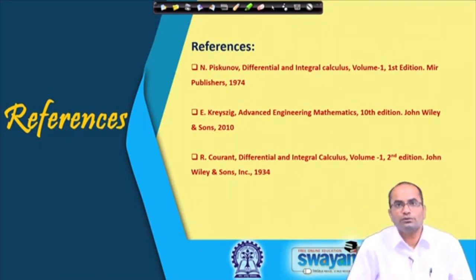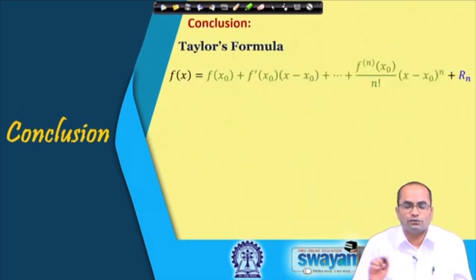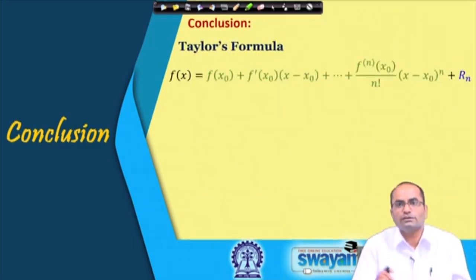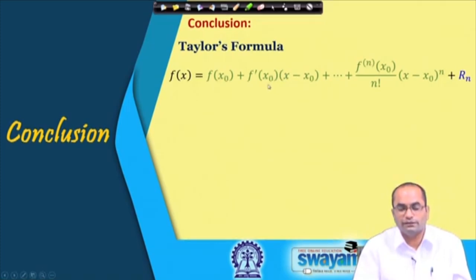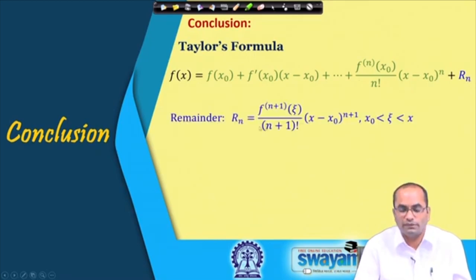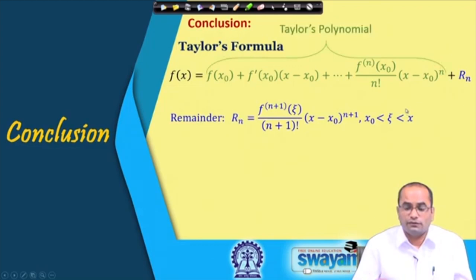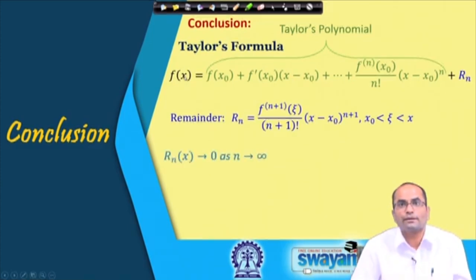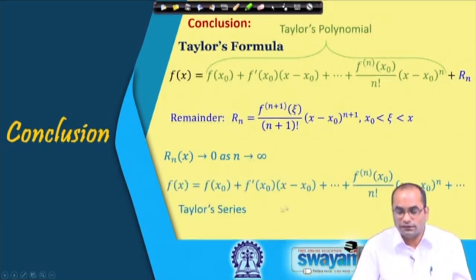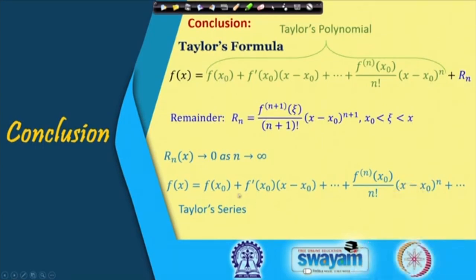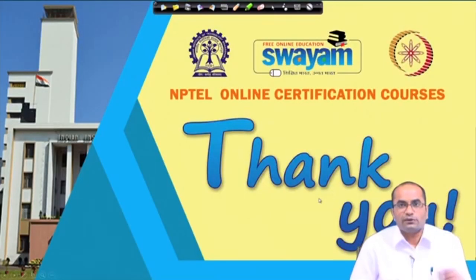These are the references used for preparing these lectures. In conclusion, today we have learned Taylor's formula — a function smooth enough can be written as f(x₀) + f′(x₀)(x−x₀) + ⋯ plus a remainder term f^(n+1)(ξ)/(n+1)! · (x−x₀)^(n+1). The polynomial part is called Taylor's polynomial and the whole result is Taylor's formula. When the remainder goes to 0 as n → ∞, we can write this as the Taylor series. Thank you for your attention.